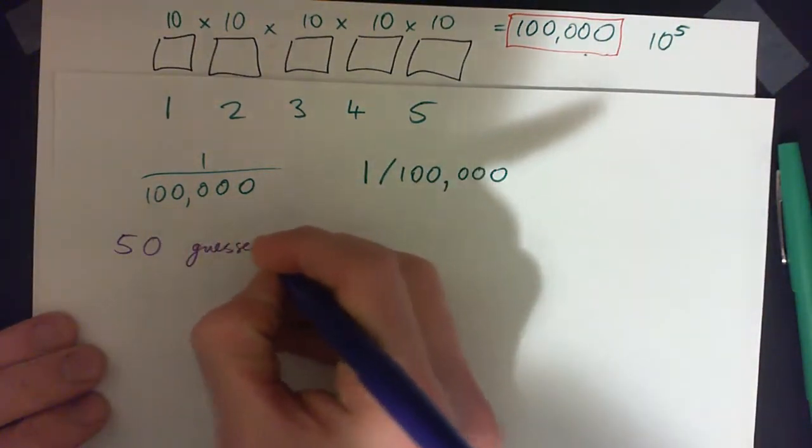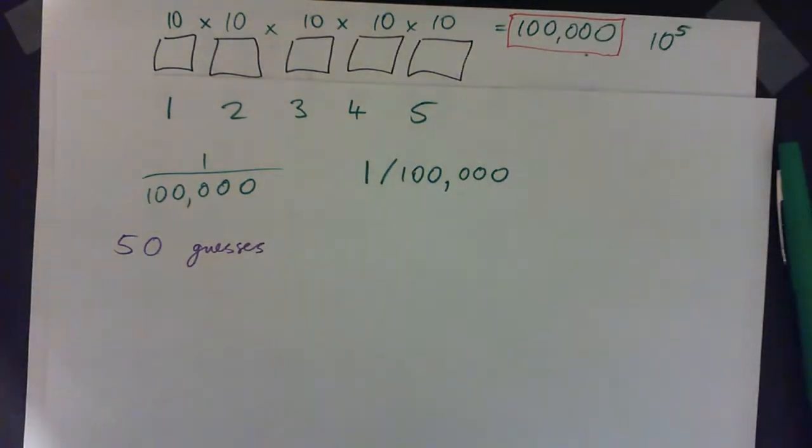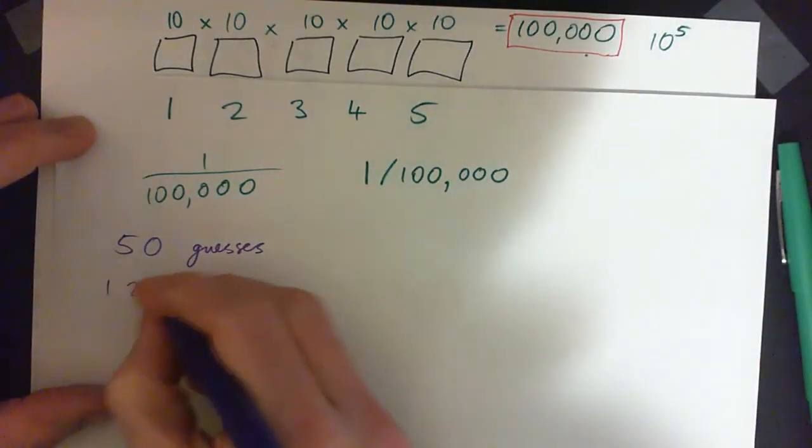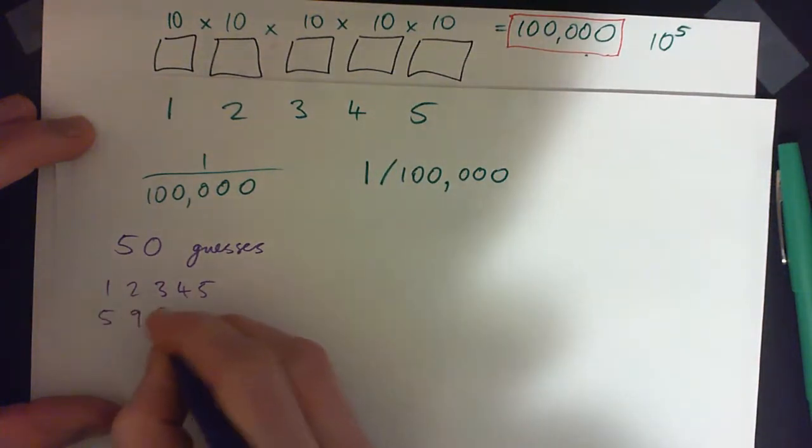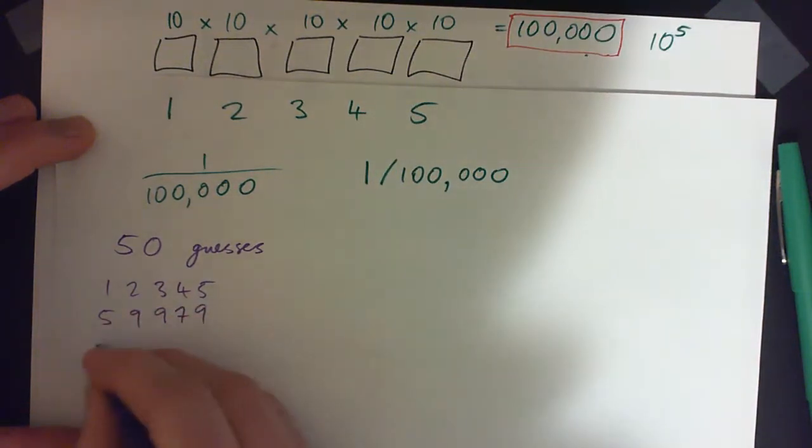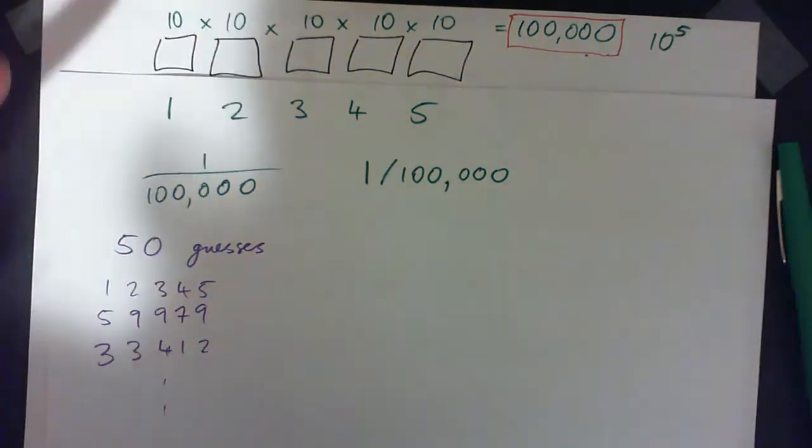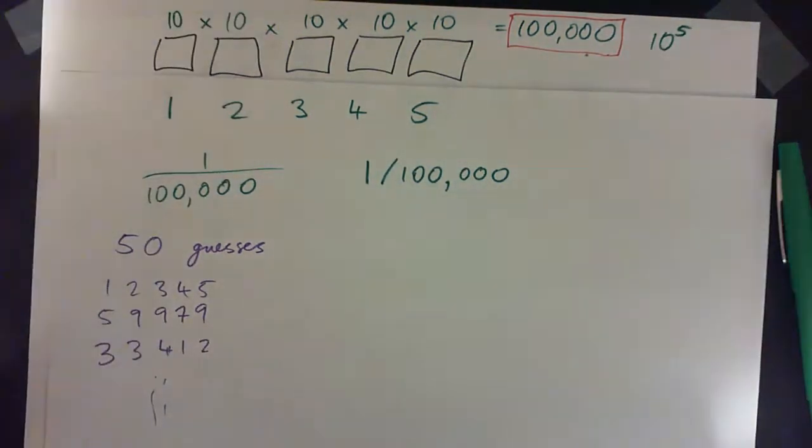that would be 50 different ones. So not just 1,2,3,4,5 you might try 5,9,9,7,9 or 3,3,4,1,2 or whatever. So you're going to try 50 different guesses.